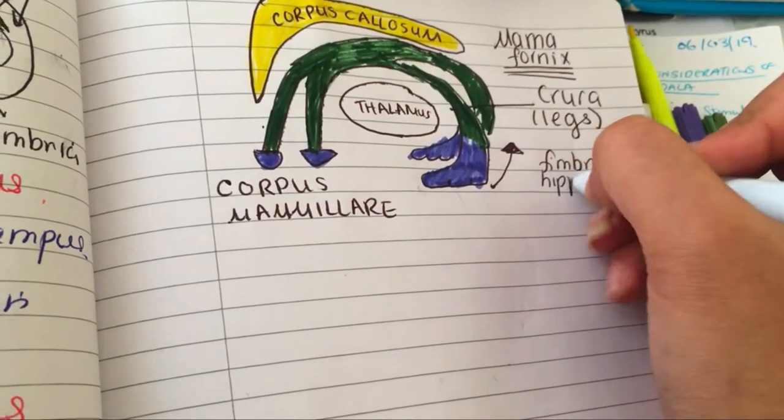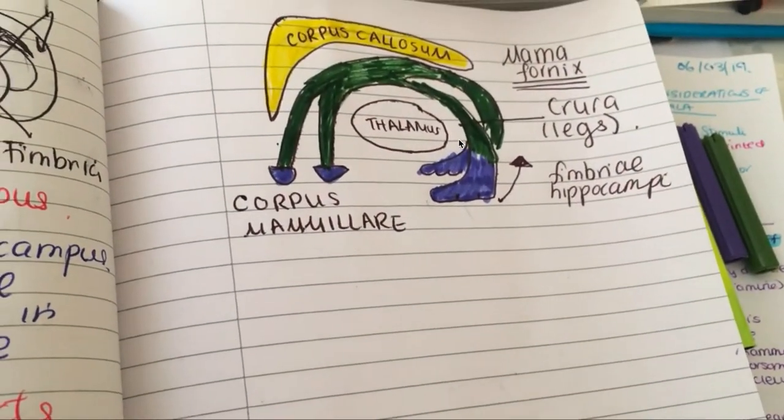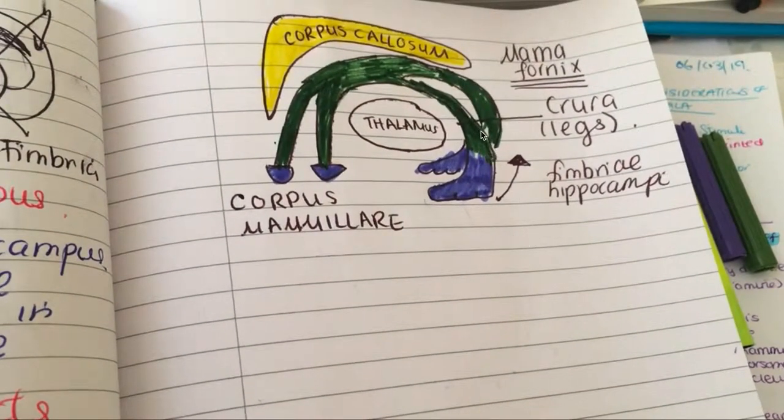And of course your fimbria hippocampi join together to form the right and left crura of your fornix, which then join together to form your body, and you also have your commissure of the fornix. And all of these structures, by the way, the point at which the crura actually form of the fornix, that would be under your splenium corpus callosum.